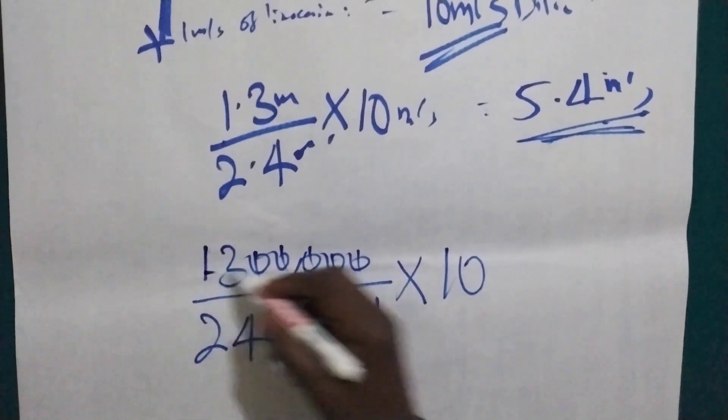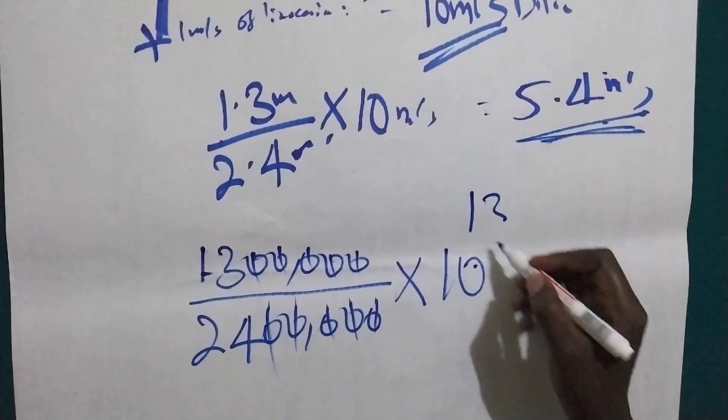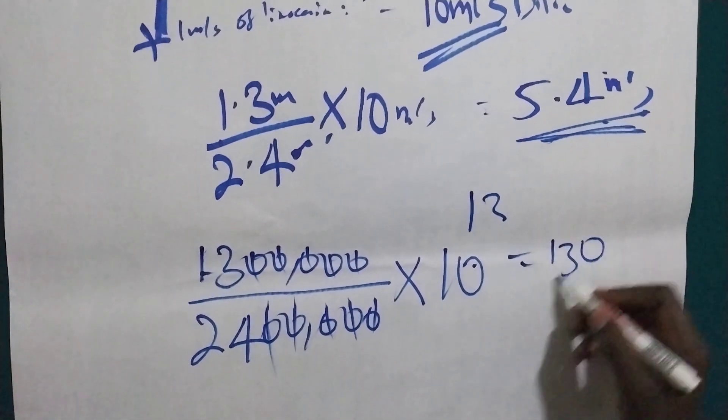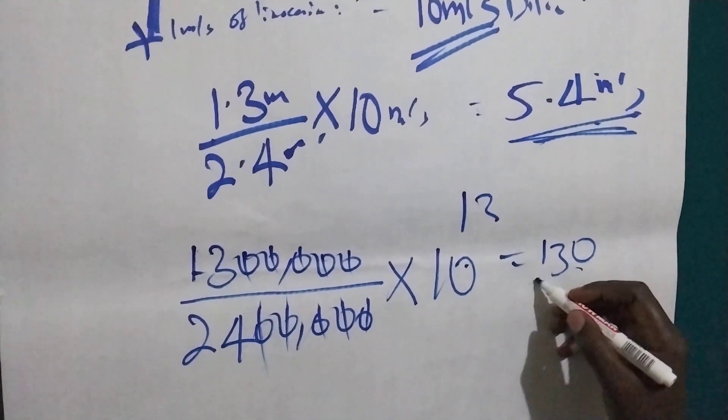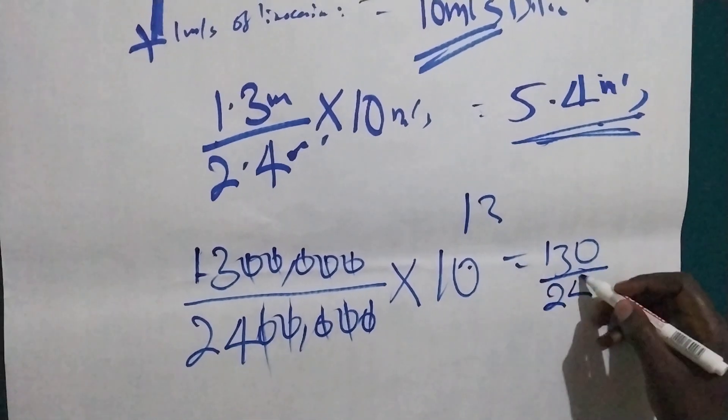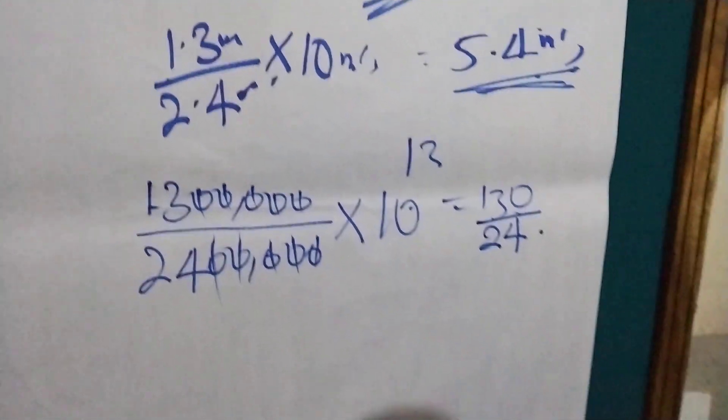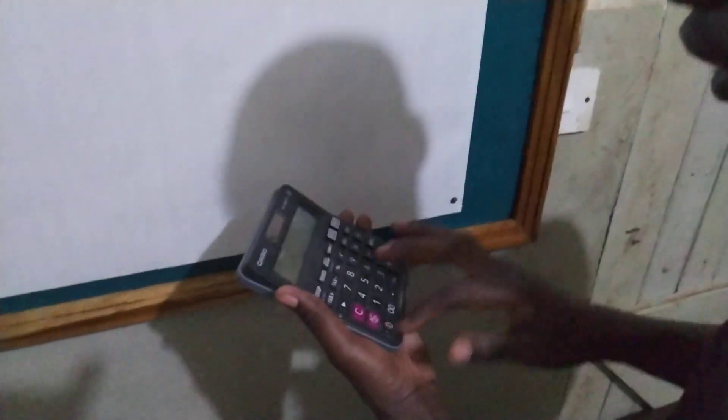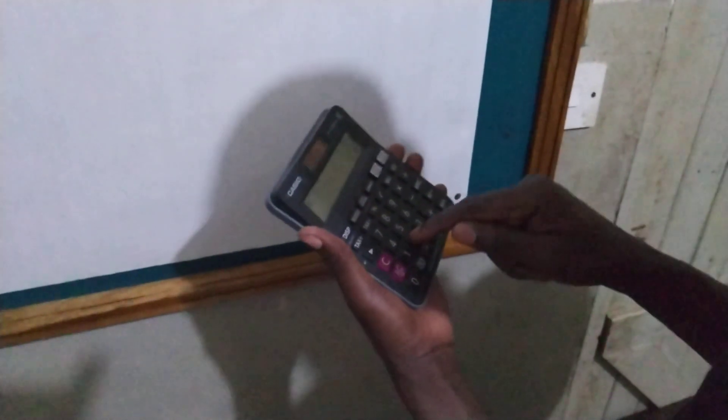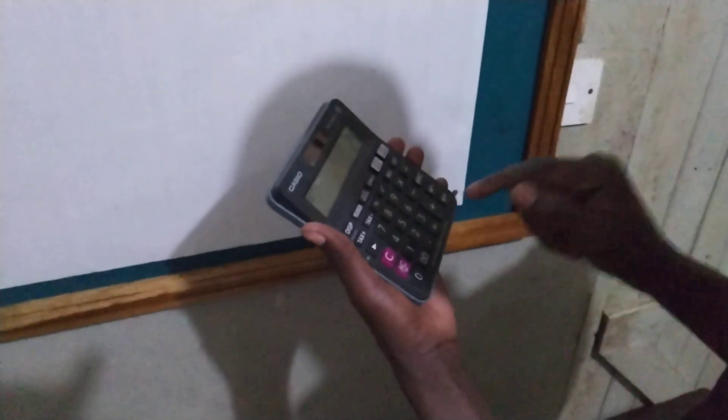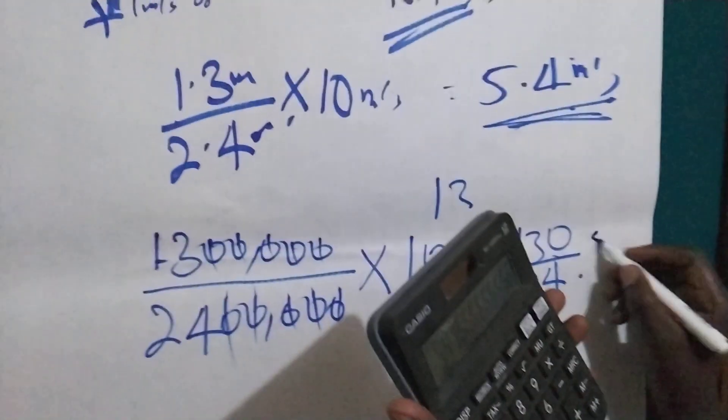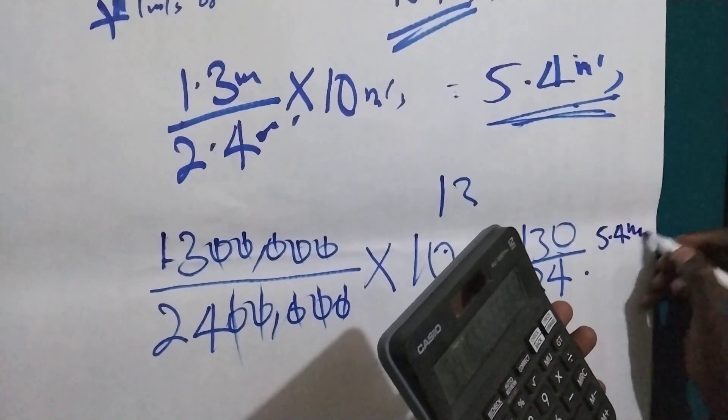So this one is 13, 130 divided by 24. What will we get? 13 divided by 24. Still we are going to get 5.4 mils.